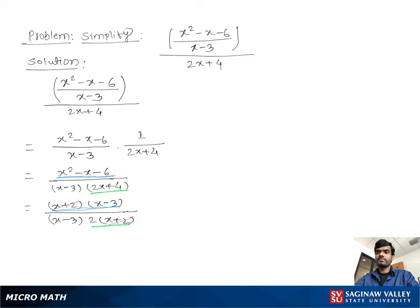(x + 2) and (x + 2) cancel out, and (x - 3) and (x - 3) cancel out. Then we get 1/2, where x is not equal to negative 2 and x is not equal to 3.